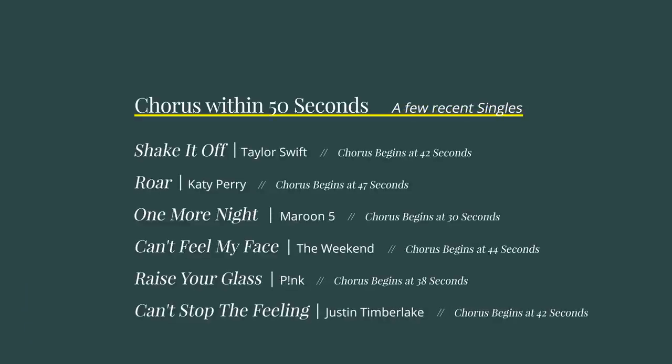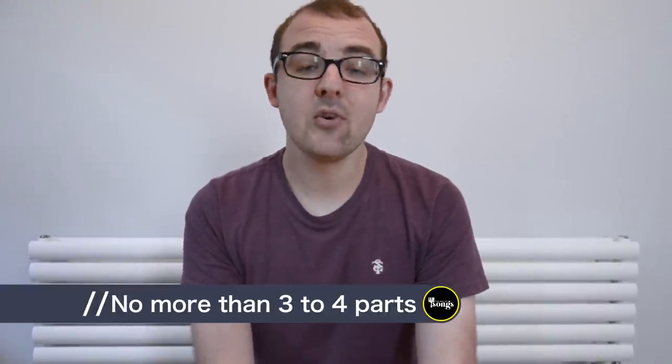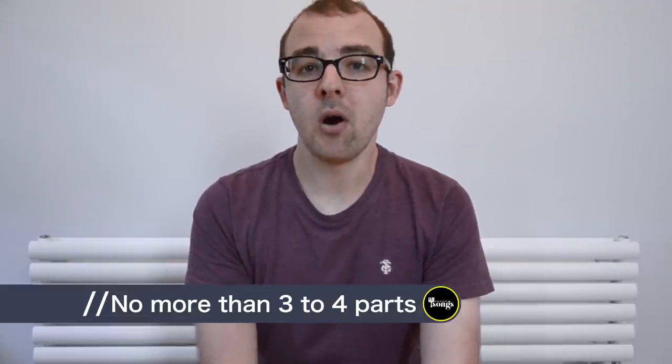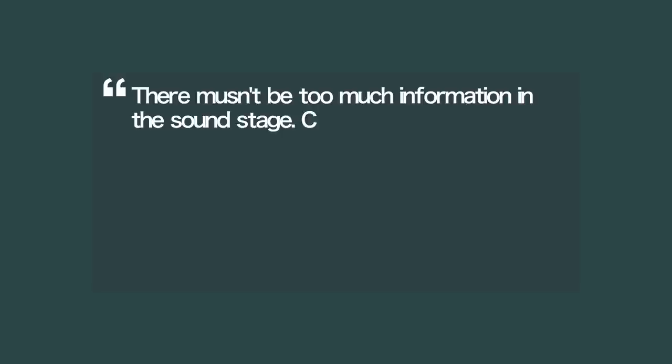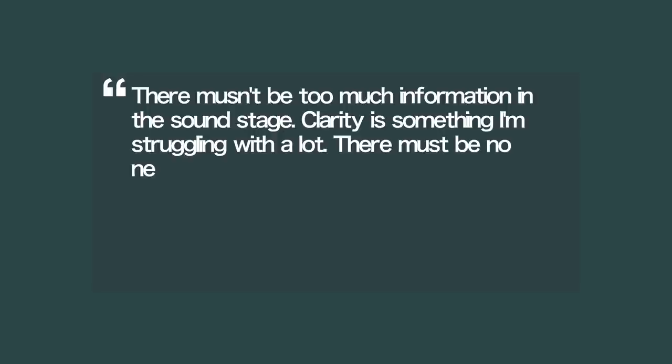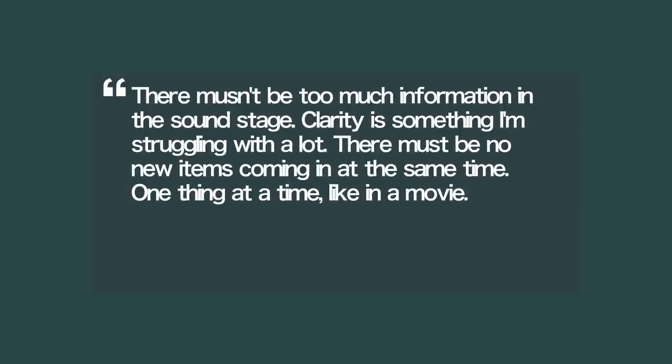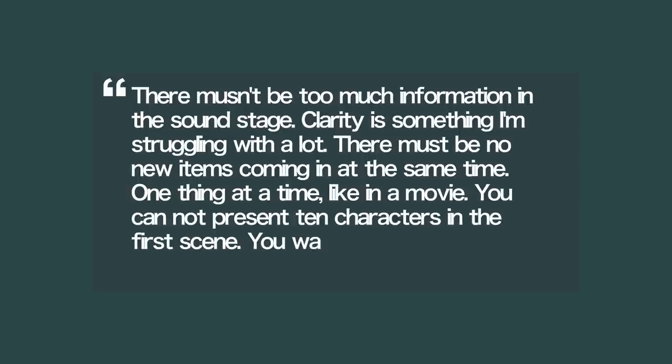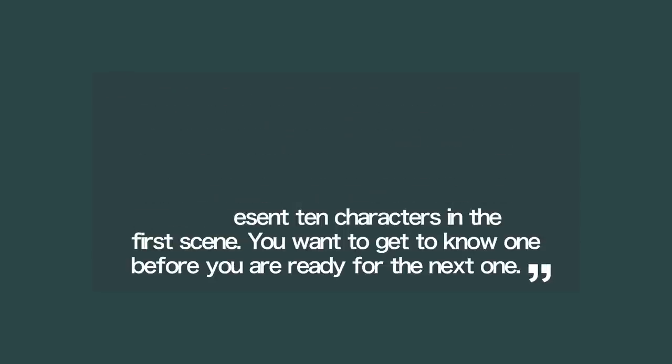You can see from just these few examples how they either start with the chorus or hit that chorus within the first 50 seconds. Rule number three is that they only use three to four melodic parts per song and they only introduce one part at a time. In a recent interview Max Martin said, 'There mustn't be too much information in the sound stage. Clarity is something I'm struggling with a lot. There must be no new items coming in at the same time — one thing at a time, like in a movie. You cannot present ten characters in the first scene.' Getting the most out of a small number of parts is something Max Martin has become extremely famous for, cutting arrangements back to just their key elements.